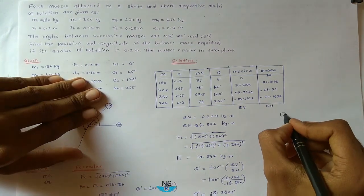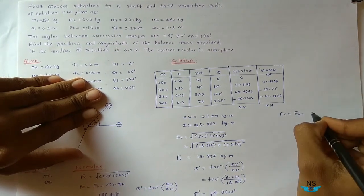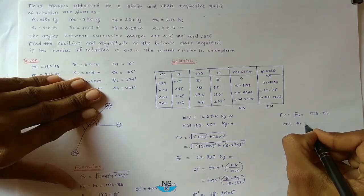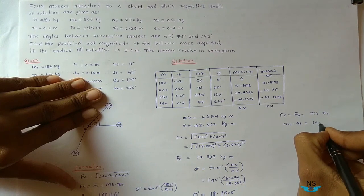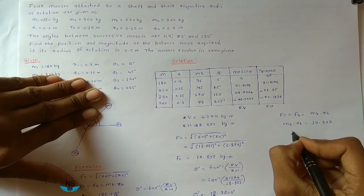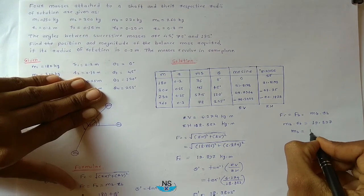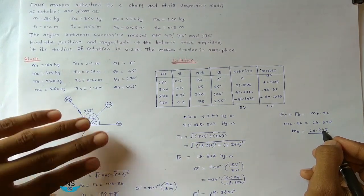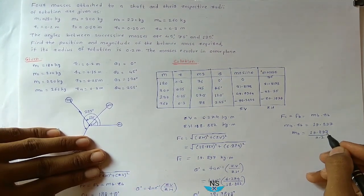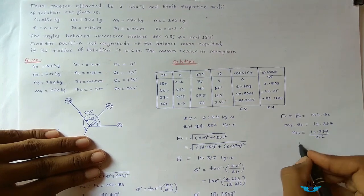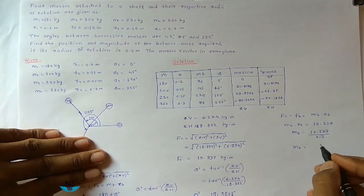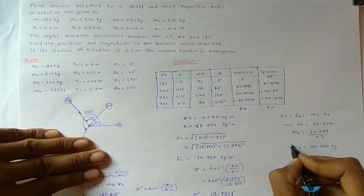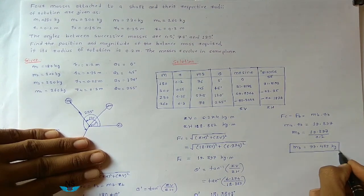Now find the balancing mass. We know Fc equals Fb equals Mb into Rb. Therefore Mb×Rb equals Fc equals 19.897 kg·meter. So Mb equals 19.897 divided by Rb, and Rb is given as 0.2 meter. Therefore Mb becomes 99.485 kg. This is the magnitude of the balancing mass.